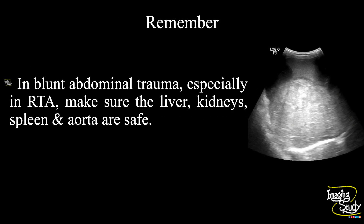Now the take-home message. In cases with blunt abdominal trauma, always try to look for the liver, kidneys, spleen and aorta. These are the common organs that get injured in road traffic accidents.